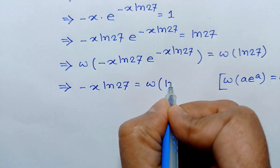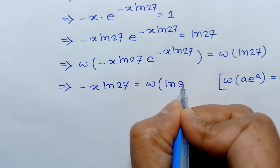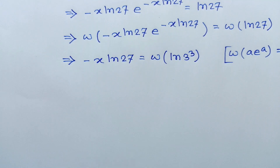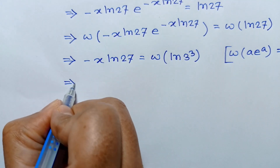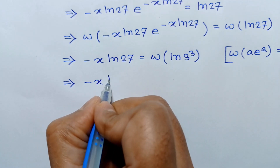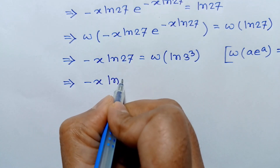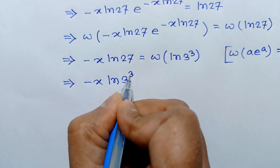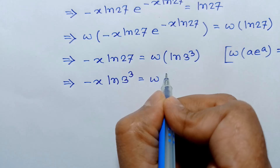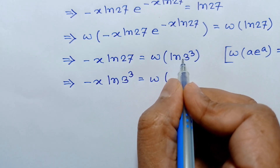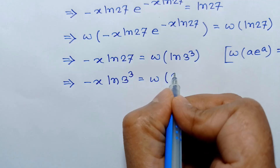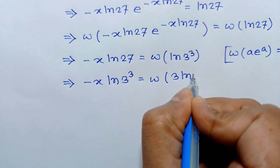This can be written with ln of 27 as ln of 3 to the power 3. So negative x times ln of 3 to the power 3 equals W of ln of 3 to the power 3, and ln of 3 cubed equals 3 ln of 3.